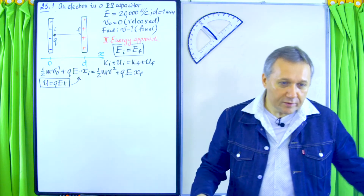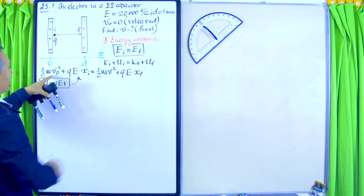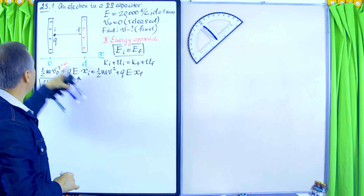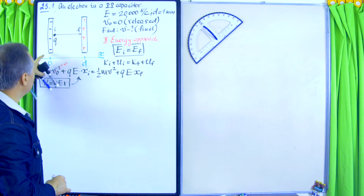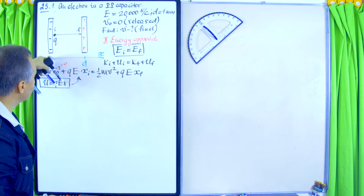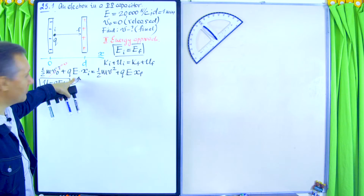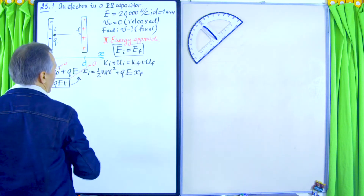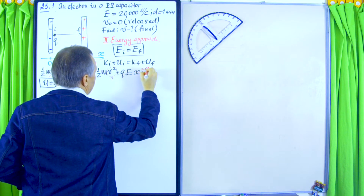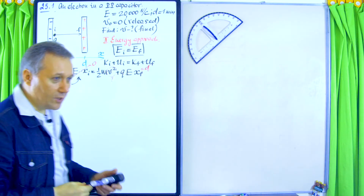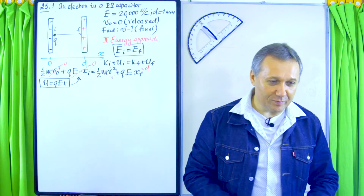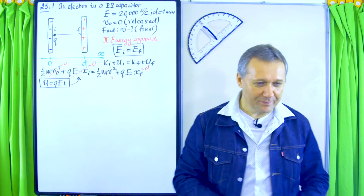Now let's zero out terms. Initial velocity is zero because the electron was released. Also, the electron was released from the negative electrode, which is our reference point where potential energy equals zero — so that term is also zero. Our unknown is v (the final velocity), and x_final equals d, which is given. One unknown, one equation — the problem is essentially solved. Solving explicitly: ½mv² = −Qe·d, so v = √(−2Qed/m).